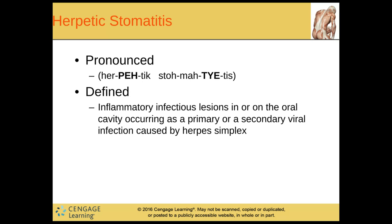And then we have herpetic stomatitis. This is the inflammatory infectious lesion in or on the oral cavity, occurring as a primary or secondary viral infection caused by herpes simplex. So that is like a fever blister.